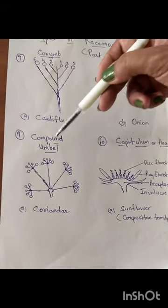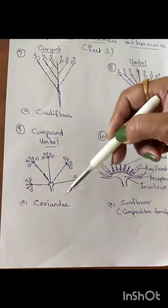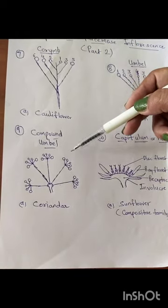The next is the compound umbel. When the umbel is in a branch form, it is called the compound umbel. This is the coriander.